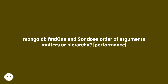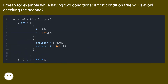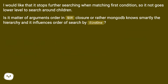MongoDB findOne and dollar-or: does order of arguments matter, or is there a hierarchy? For example, with two conditions, if the first condition is true, will it avoid checking the second? I would like it to stop further searching when matching the first condition, so it doesn't go to a lower level to search children. Is it a matter of argument order in dollar-or, or does MongoDB smartly know the hierarchy and influence the order of search by findOne?